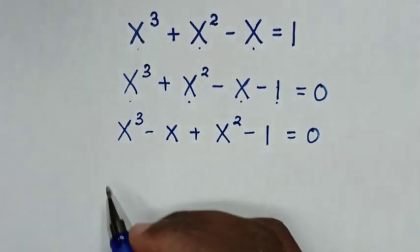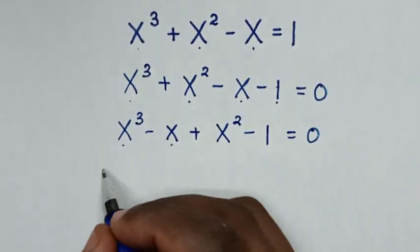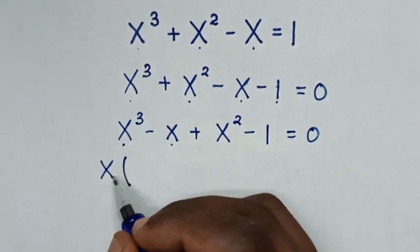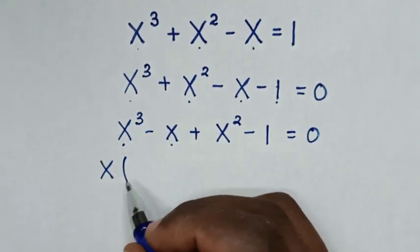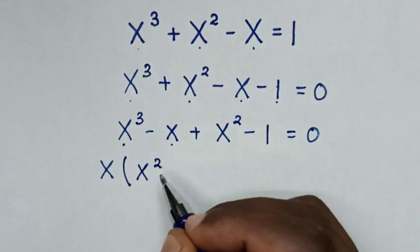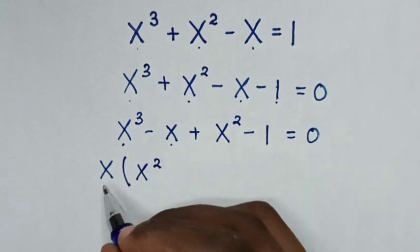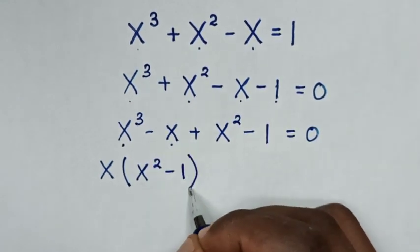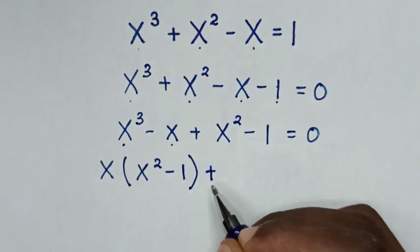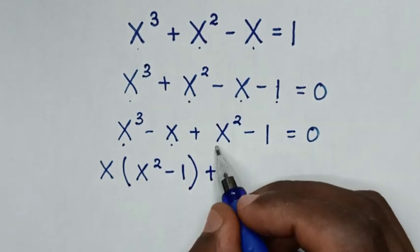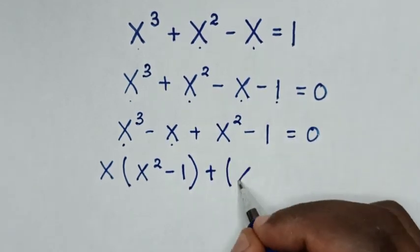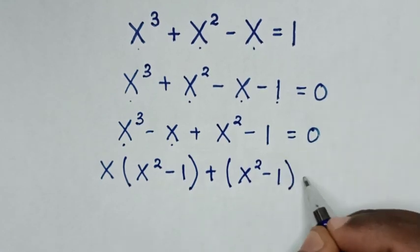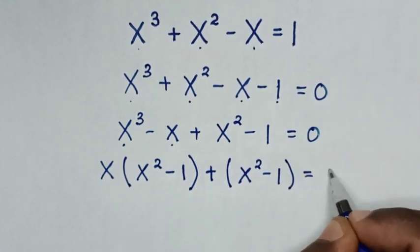Then in the next step, x is common here, so we take x out of the bracket: x(x² - 1), then plus, placing a bracket, (x² - 1) = 0.